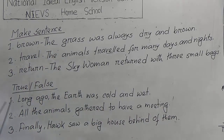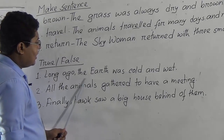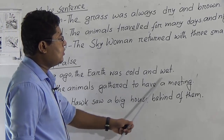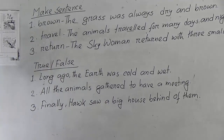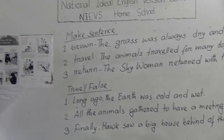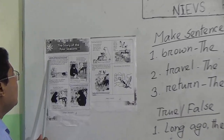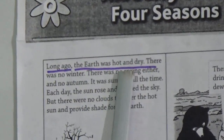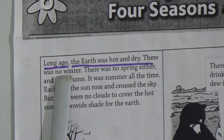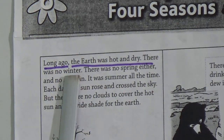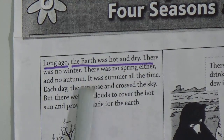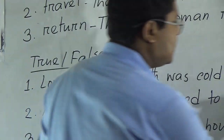Now true/false. Number one: 'Long ago the earth was cold and wet.' Let's go to the unit. The text says: 'Long ago the earth was hot and dry.' Our given sentence is 'Long ago the earth was cold and wet' — which is the opposite. So the correct statement is 'Long ago the earth was hot and dry.' Therefore, the given sentence is FALSE.